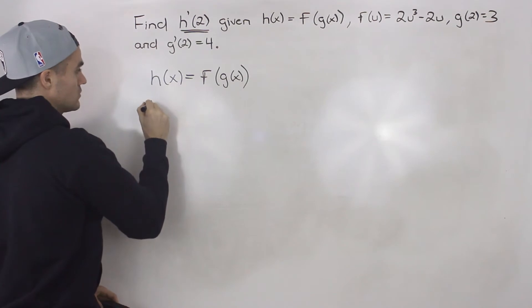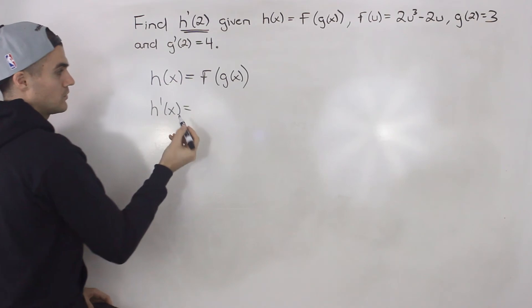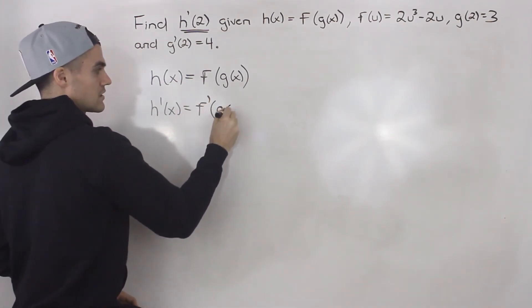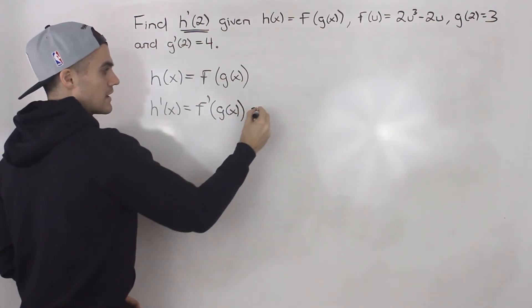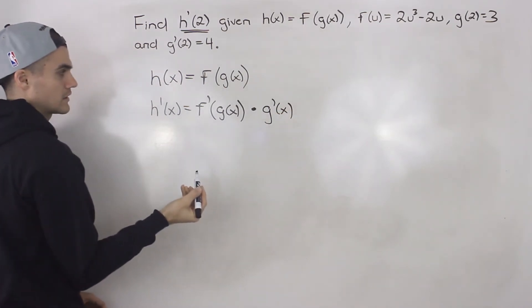So we know to find the derivative of h(x) we're going to have to use the chain rule. And in general what do we do? We take the derivative of the outer function first, keeping the inner function the same, and then we multiply it by the derivative of the inner function.